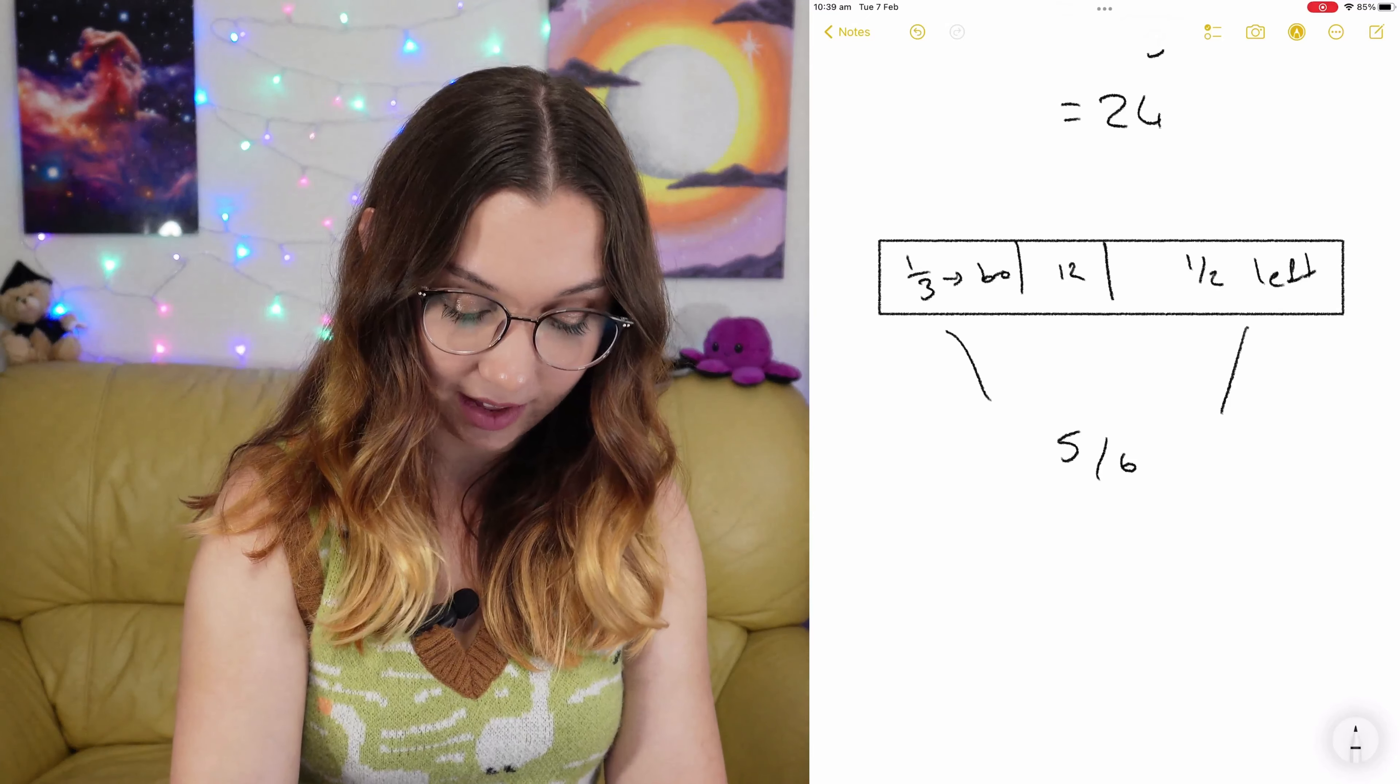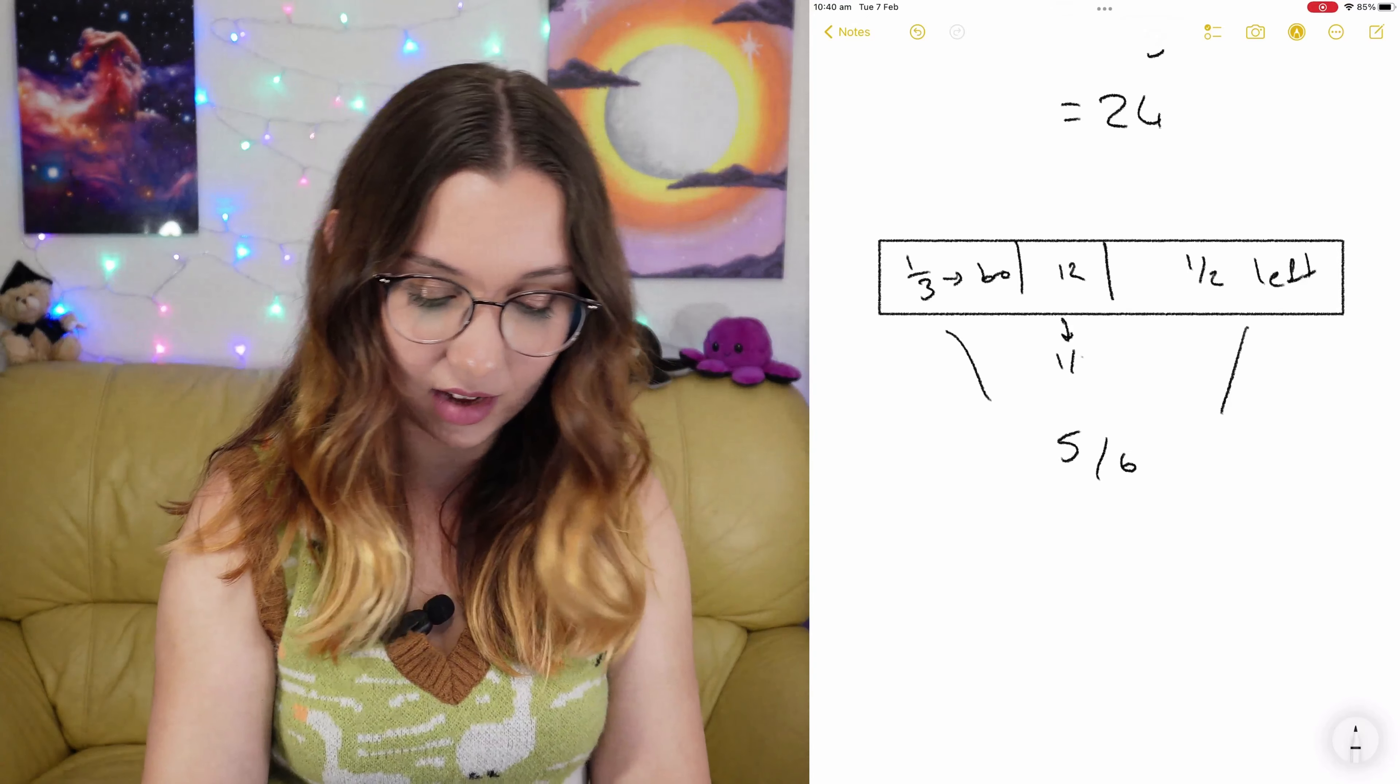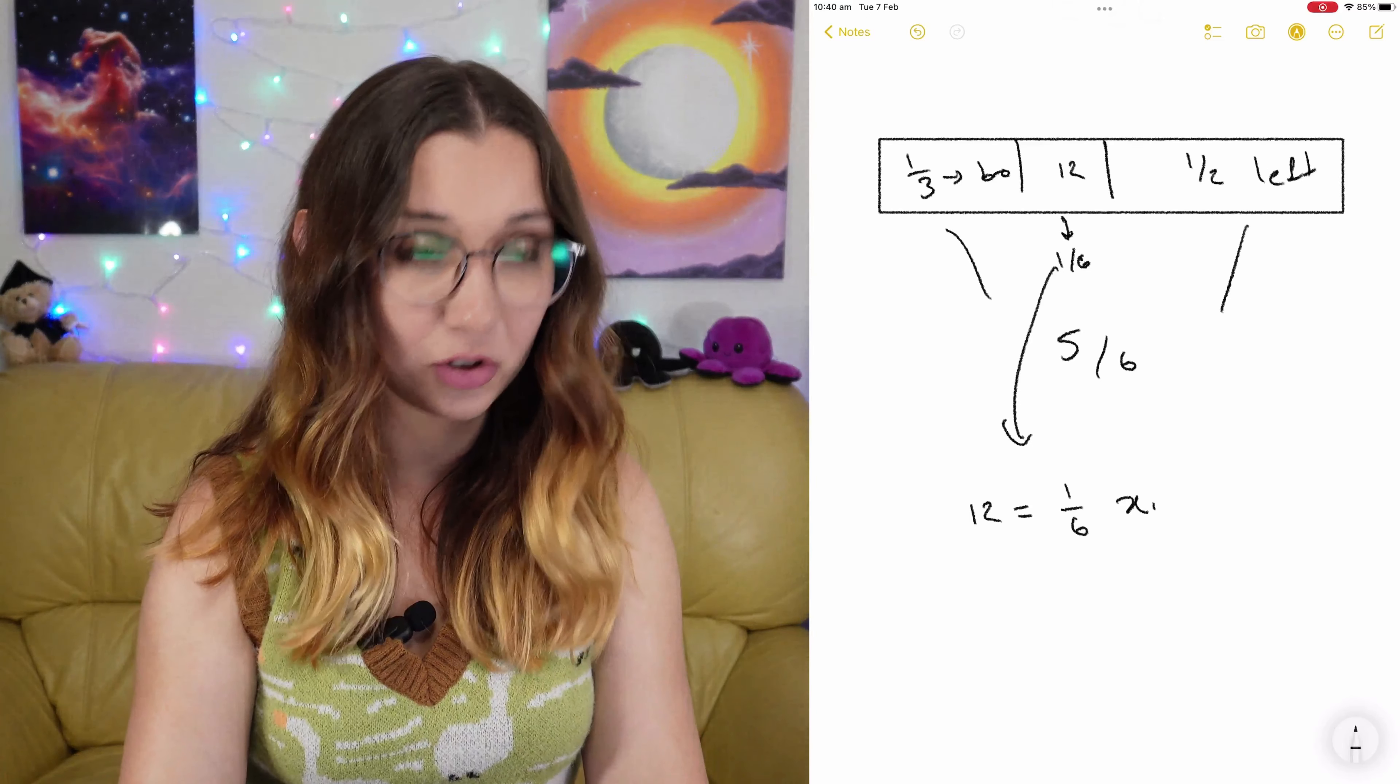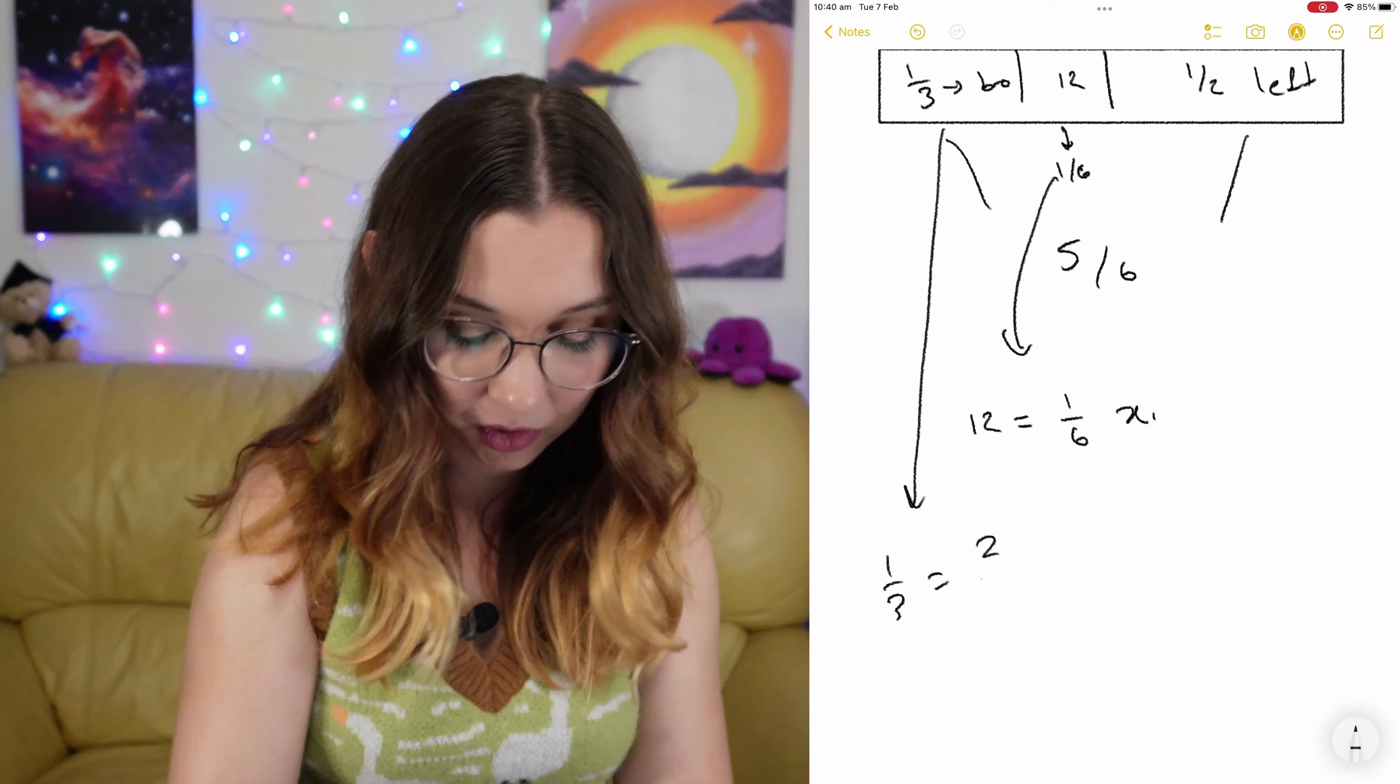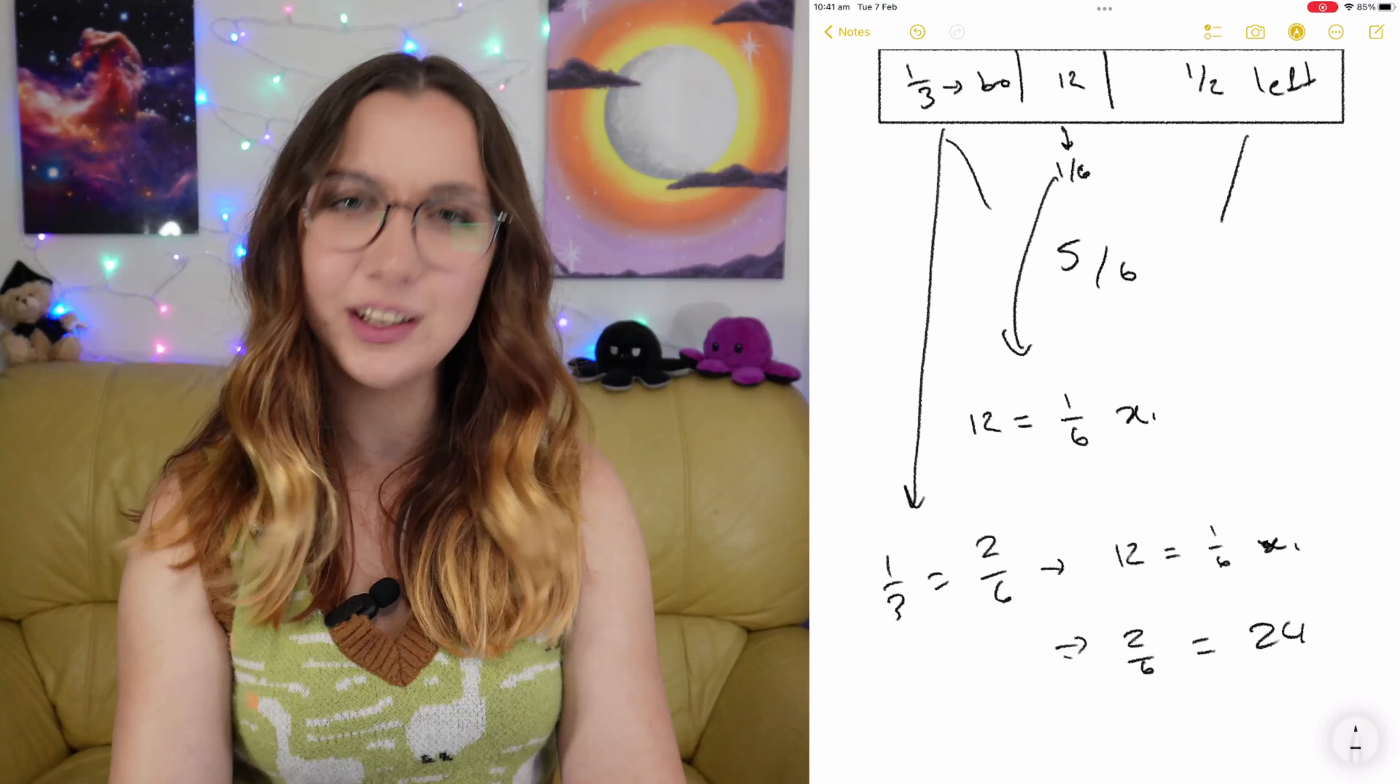The third that goes to the brother and the half that's left over is five sixths, that makes this one sixth. So 12 is equal to one on six multiplied by the total. This is so much faster. If 12 is one sixth of x1, then two sixths must be 24. That's quite elegant. I like that.